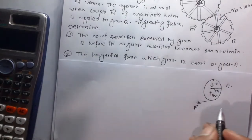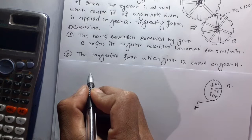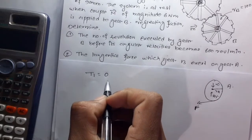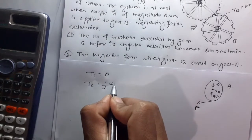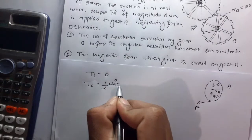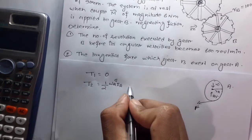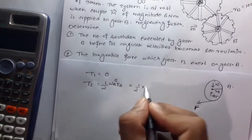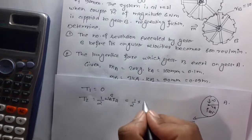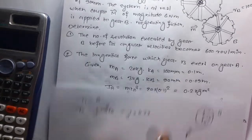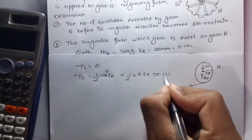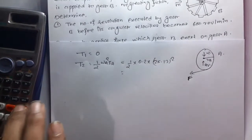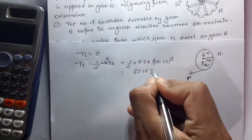We use conservation of energy. Initially T1 = 0 (system at rest). T2 = ½IA × ωA² = ½ × 0.2 × (25.13)² = 63.15 J.